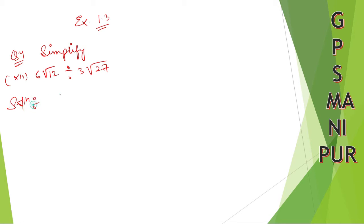Solution: write down 6√12 divided by 3√27. Let me write it down like this, it will be easy for us to calculate.